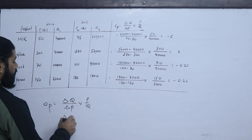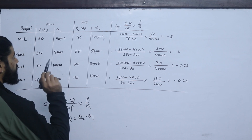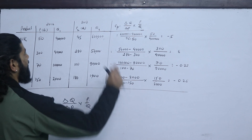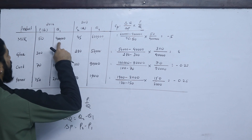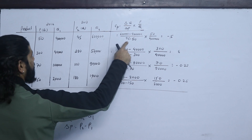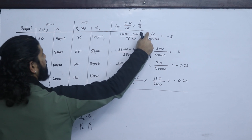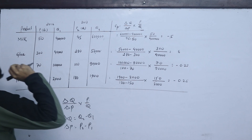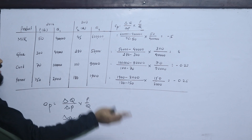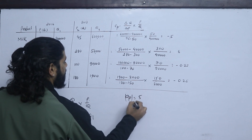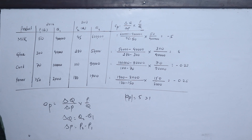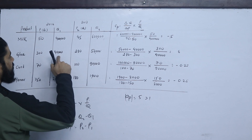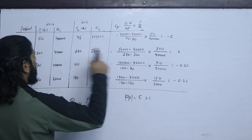Using the proportion method: Ep = (ΔQ / ΔP) × (P / Q), where initial price and quantity are the 2016 data. ΔQ = Q2 − Q1 (2017 minus 2016), and ΔP = P2 − P1. For milk: ΔQ = 6 lakh − 4 lakh, ΔP = 45 − 50 = −5. The milk price elasticity = minus 5, which means relatively elastic (|Ep| > 1), so a 1% price change leads to a 5% quantity change.